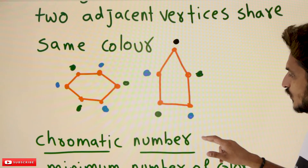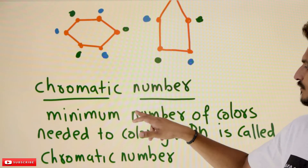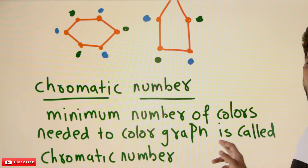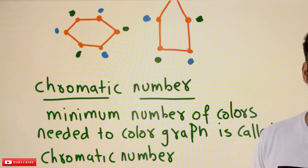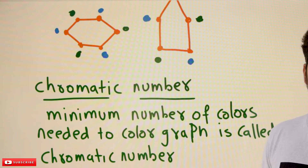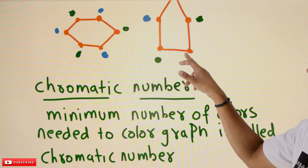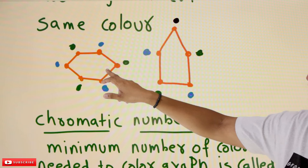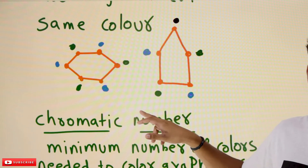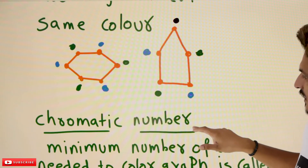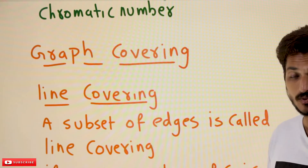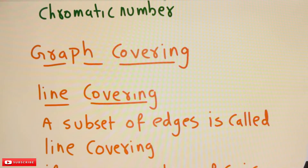That's why we call it the chromatic number — the minimum number of colors needed to color a graph is called the chromatic number. In the second graph, the chromatic number is three; in the first graph, the chromatic number is two.